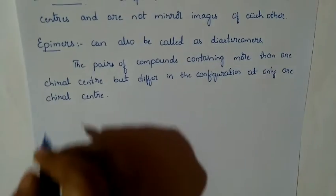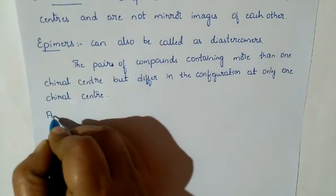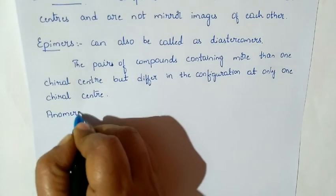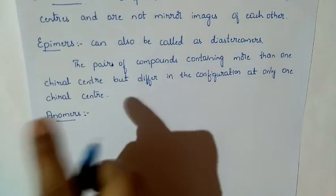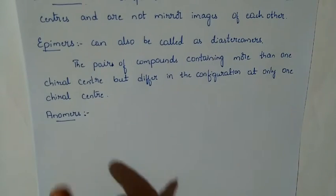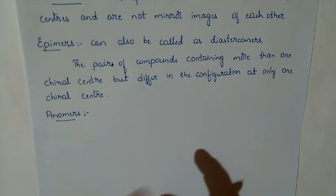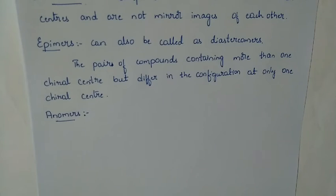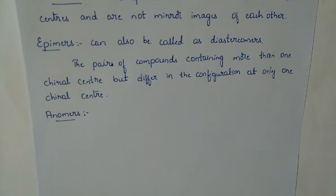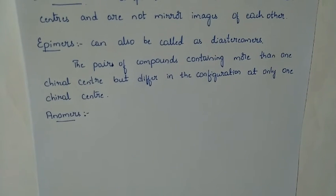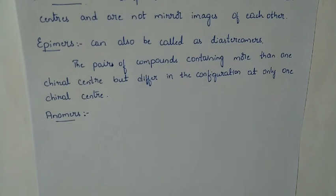Anomers are just like epimers. We have already discussed anomers — that is alpha D-glucose and beta D-glucose. Together they have five chiral carbon atoms, but only the first carbon differs in configuration between them. So they are called epimers, and since they differ specifically at carbon 1, they are also called anomers.